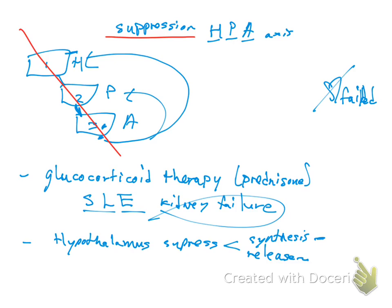The suppression of CRH synthesis in the hypothalamus then blocks the adrenocorticotropic hormone stimulatory effect on the anterior pituitary gland. Because CRH normally stimulates ACTH release from the pituitary, and now CRH is suppressed, ACTH production is blocked as well.